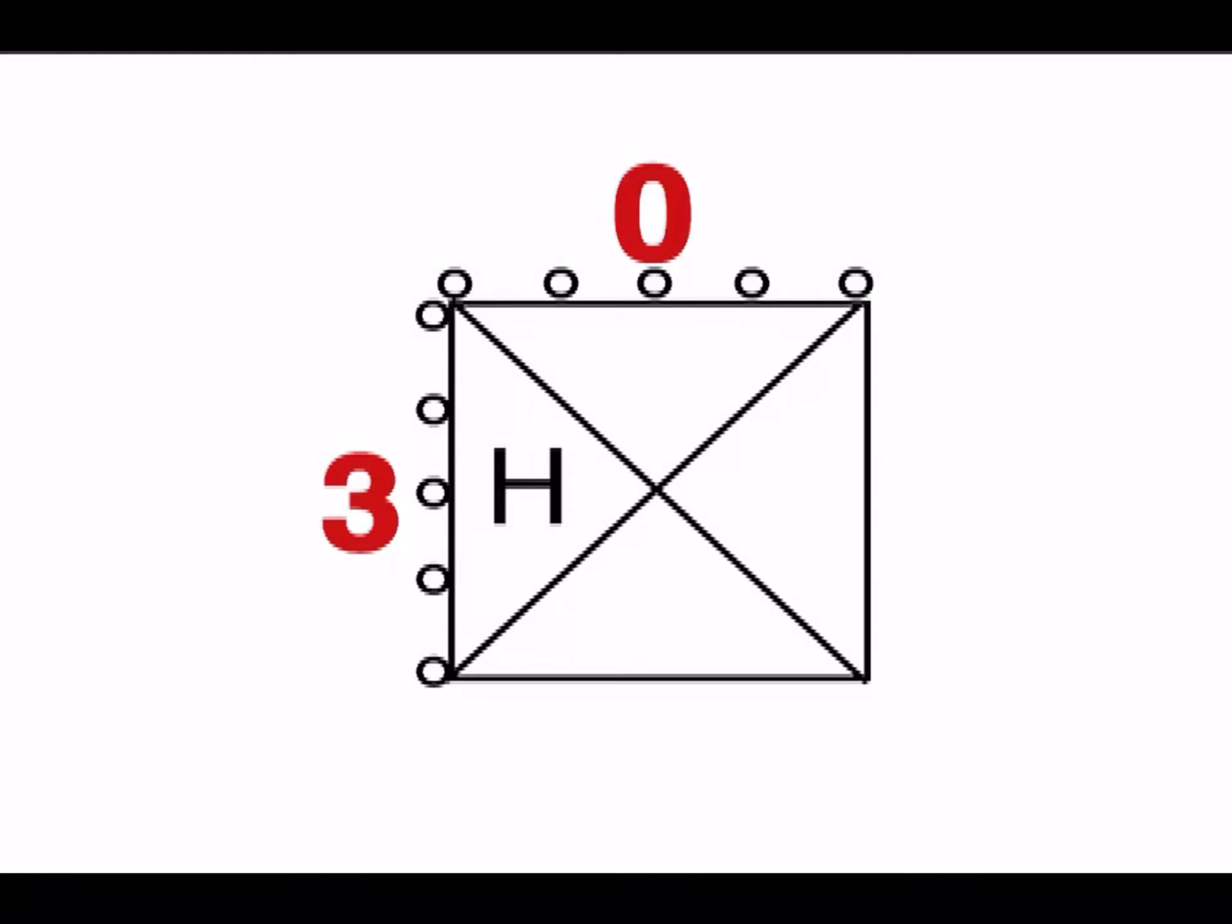Hammer on is represented by an H. Hammer on is when a note is sounded, and while it is still ringing, a left-hand finger is used to quickly press down a fret that is on the same string.